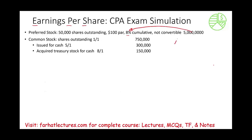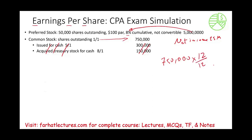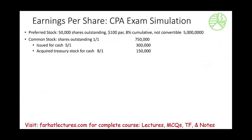We're going to assume net income of $25 million and use that later. Starting with common shares: we started the year with 750,000 shares. If we ended the year with 750,000 — meaning no other transactions occurred — we had those shares for 12 out of 12 months, giving a weighted average of 750,000. But that's not what actually happened in this scenario.